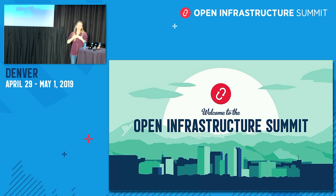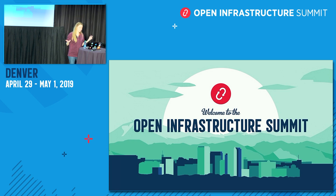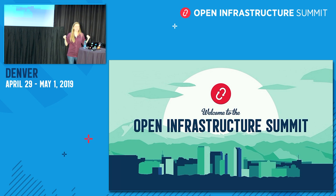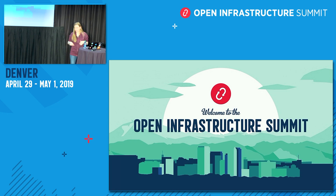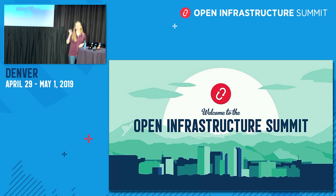That continued to evolve over the year. Late in 2017, we introduced the idea of pilot projects at the Sydney summit. At that point, we had evolved the adjacent technologies idea to identify the areas we were most interested in: data center cloud, which is OpenStack; containers; edge computing; and CI/CD. Those were the four big strategic focus areas we started with late in 2017.